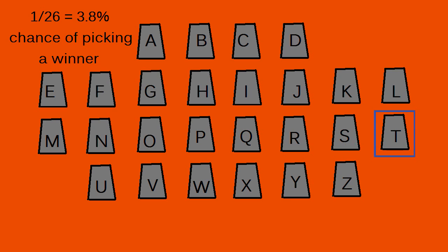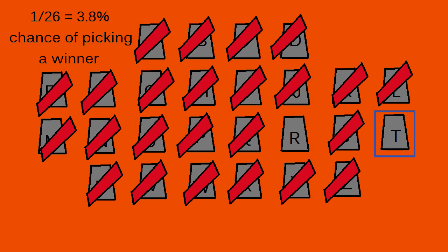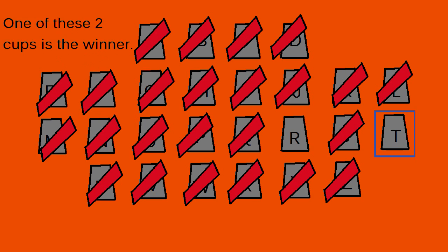Let's say you pick cup T. Now the judge will cut out every other cup in the game besides yours and one other. Cup R is now left alongside your pick of cup T.